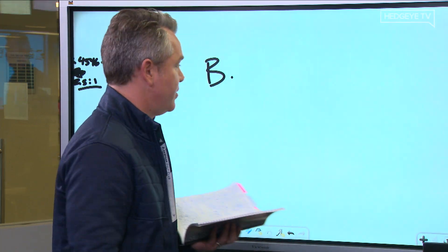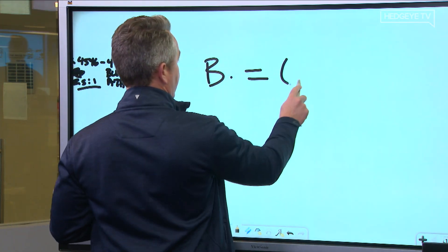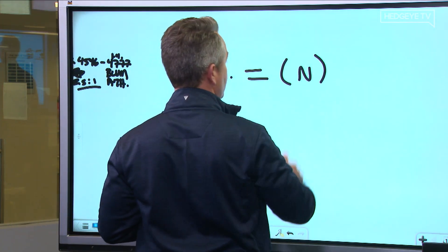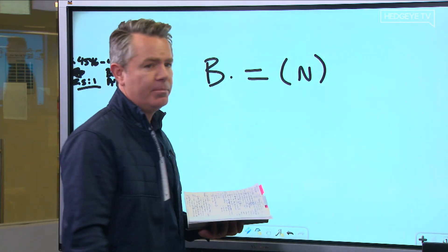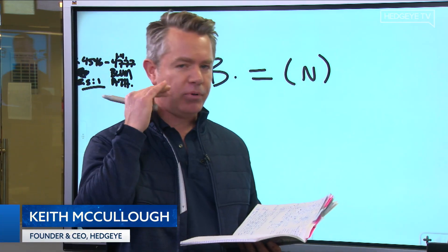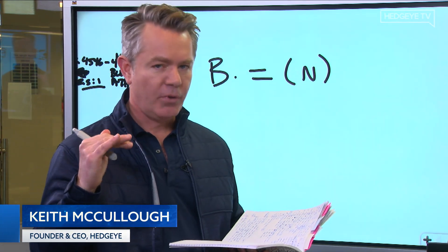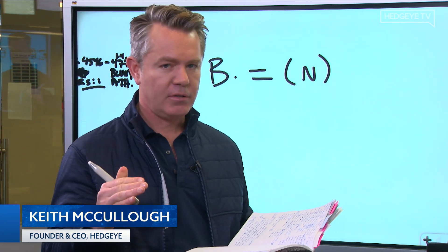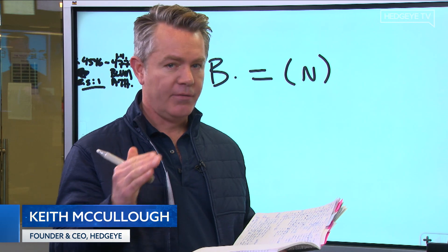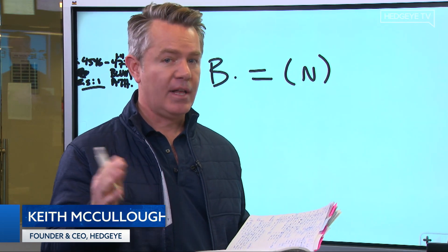Bitcoin went to neutral — B equals N. When it's neutral, that means it has a plain line of sight within the risk range of not only getting above the trend but going a lot higher above that trend.